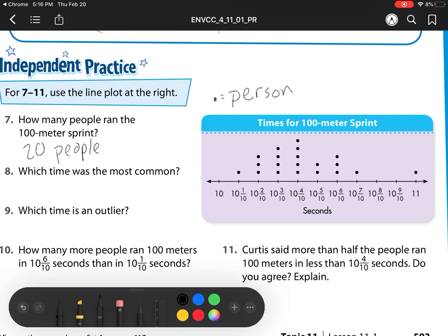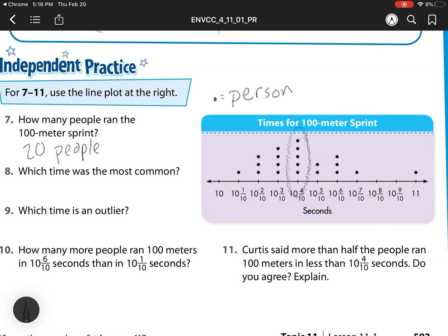Which time was the most common? So most common means which one had the most dots. And I look, this one's the most common because it's the tallest. So that is equal to this time of 10 and 4 tenths. And I want to use that label of seconds.